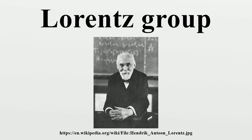Connected components: Because it is a Lie group, the Lorentz group O is both a group and admits a topological description as a smooth manifold. As a manifold, it has four connected components, meaning it consists of four topologically separated pieces. The four connected components can be categorized by two transformational properties. Some elements are reversed under time-inverting Lorentz transformations — for example, a future-pointing time-like vector would be inverted to a past-pointing vector.